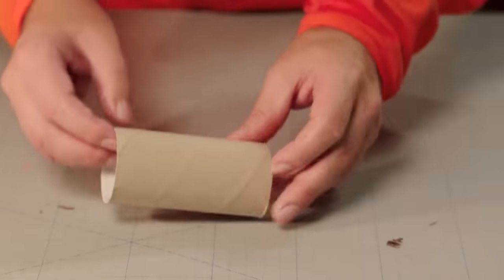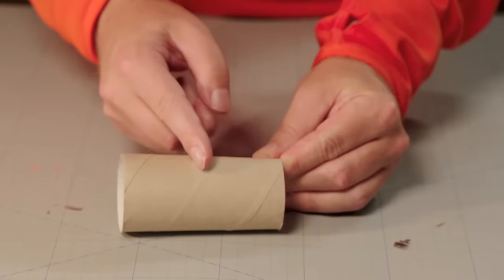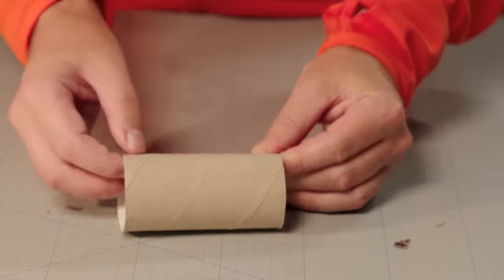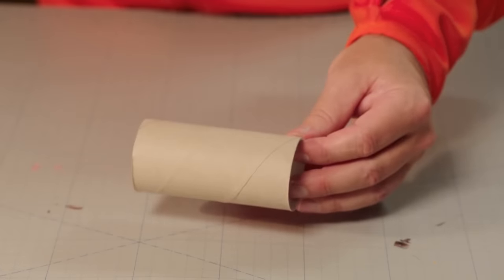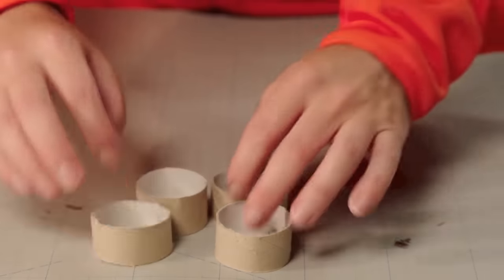Now cut the toilet roll cylinder in four equal parts and glue them to the underside of the porcupine. First, get a toilet roll and cut it into four equal parts. You'll end up with four cute little legs like this.